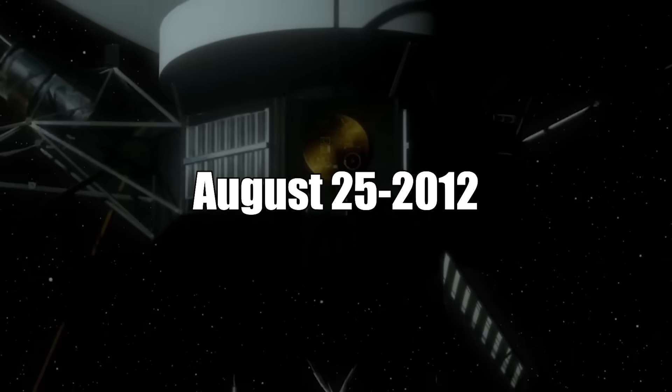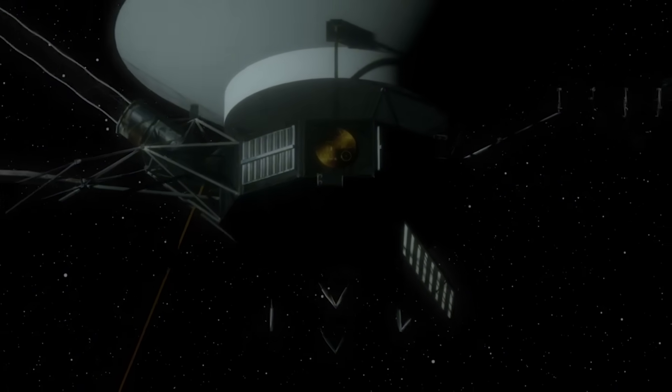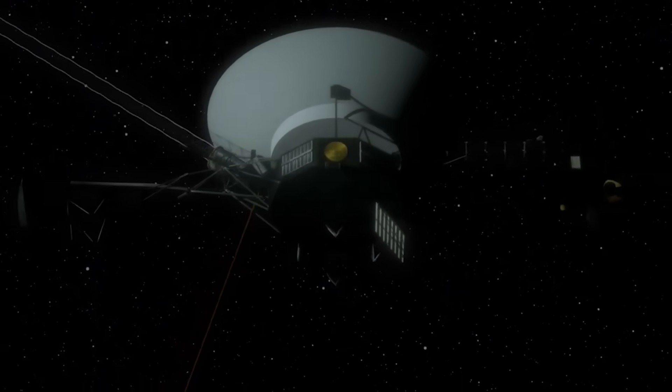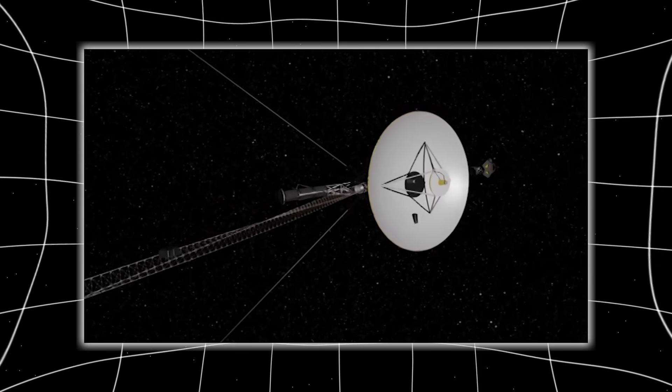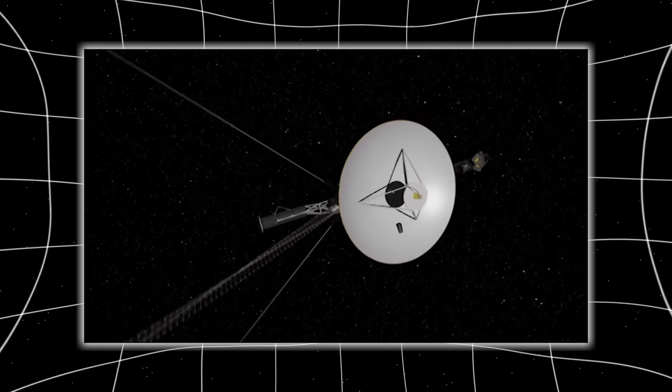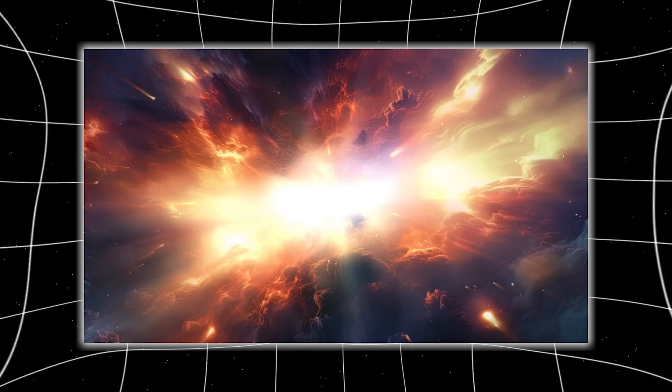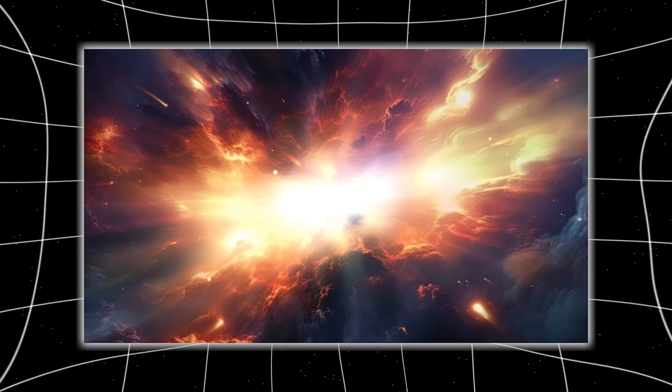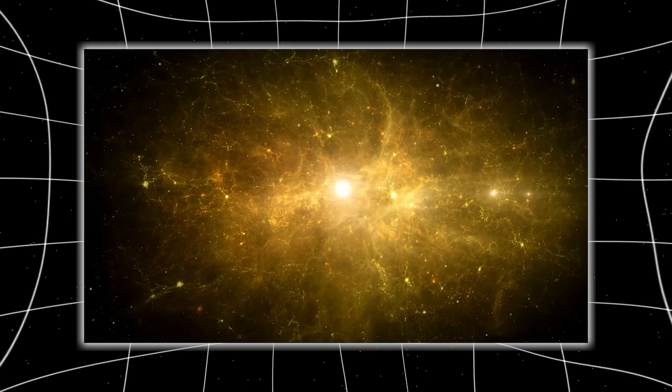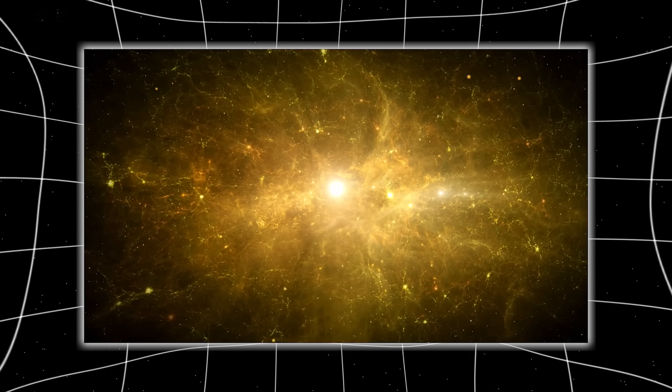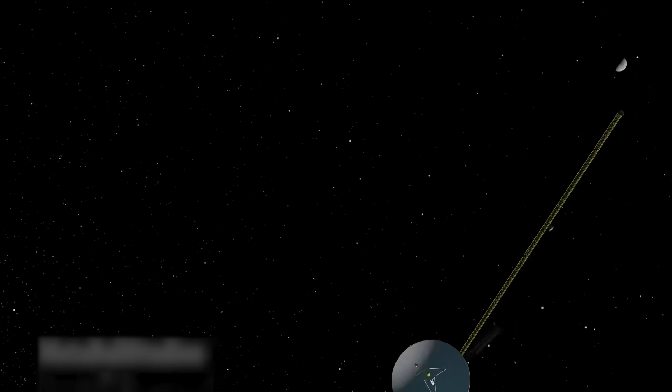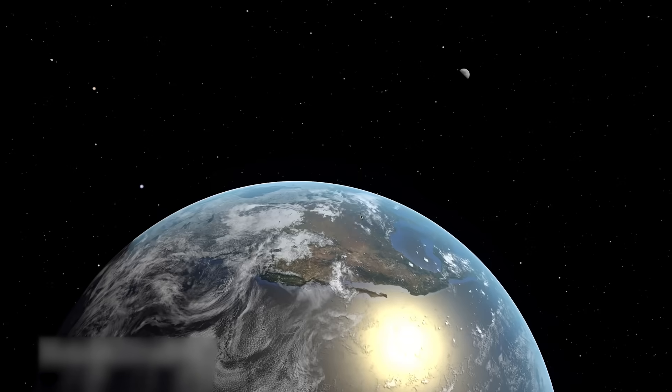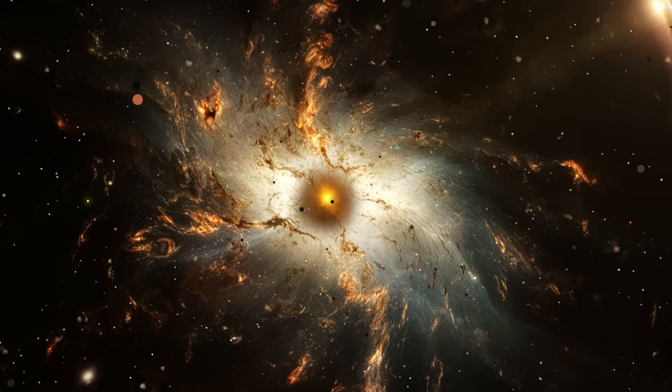On August 25, 2012, Voyager 1 officially entered interstellar space. It should have felt like crossing a border, like stepping into a new cosmic country. Instead, the spacecraft encountered a region where some measurements confirmed interstellar conditions while others looked strangely solar in nature. Plasma density skyrocketed as expected, but the magnetic field orientation did not shift. This created a bizarre contradiction. Voyager appeared to be both inside and outside the solar system simultaneously. It was the first sign that the boundary between worlds is not a clean line, but a turbulent, unknowable frontier.